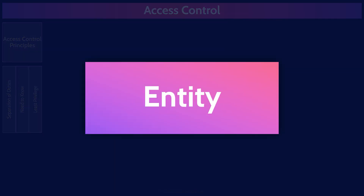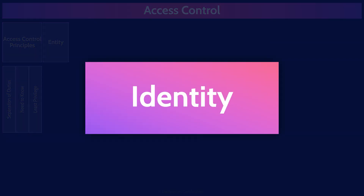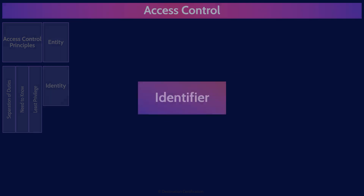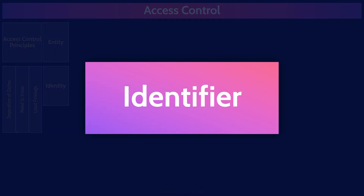An entity is a single unique person or process that can have multiple associated identities. Identities vary according to context, so an entity such as a person can have multiple identities, such as a work identity and a personal identity. An identifier is a means by which an identity can be asserted, such as a username or an ID card — identifiers are how you uniquely identify a specific identity.